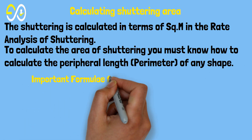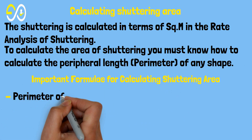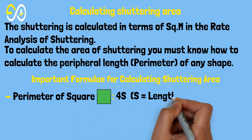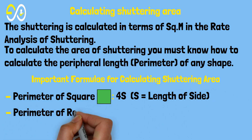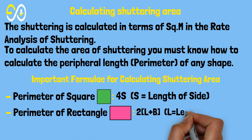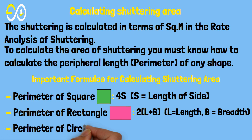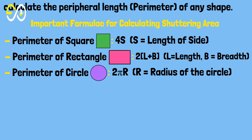Important formulas for calculating shuttering area. Perimeter of a square equals 4 times S, where S equals the length of side. Perimeter of a rectangle equals 2 times (L plus B), where L equals length and B equals breadth. Perimeter of a circle equals 2 times pi times R, where R equals the radius of the circle.